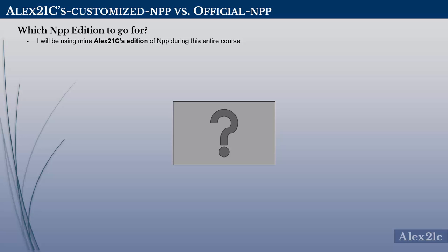Now you have a clear understanding of the changes I've made in my customized edition, and it's time for you to decide which edition to go for. In this course I will use the customized version of Notepad++. You can have a quick look at both versions and decide which one is suitable for you. You can also go for the standard official edition if you are quite familiar with the interface, shortcut keys, and style and preferences settings.